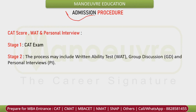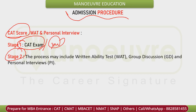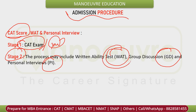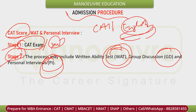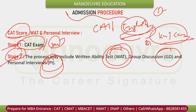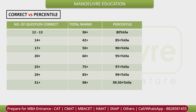Next is the selection process. Stage 1 is the CAT score — you need a good percentile. Stage 2 is WAT and GDPI, which varies by college. Along with CAT preparation and MBA entrance preparation, work on your spoken English because all interviews are in English and communication is tested. That is why the first step is reading the newspaper — to stay updated with current affairs.